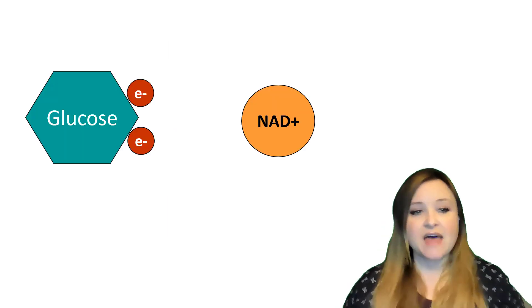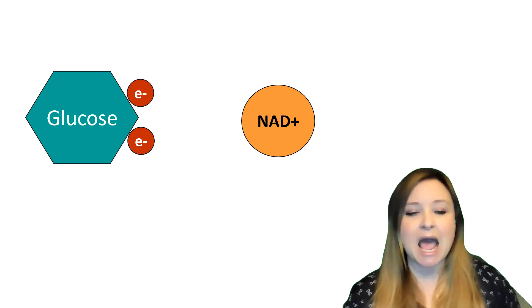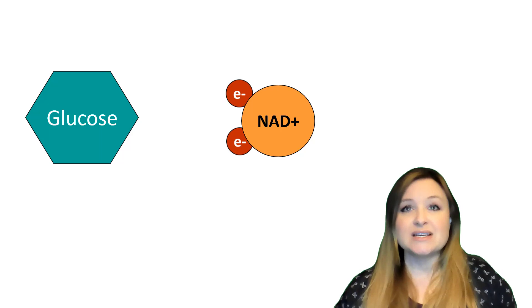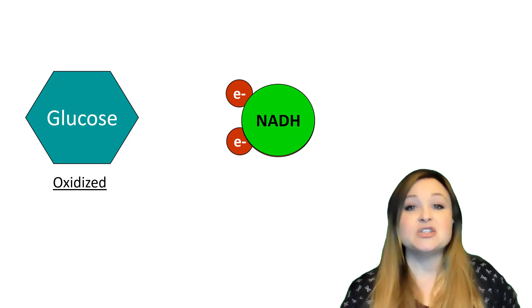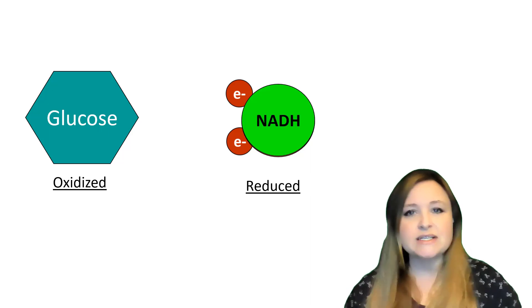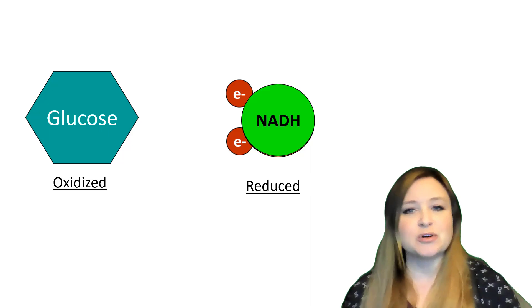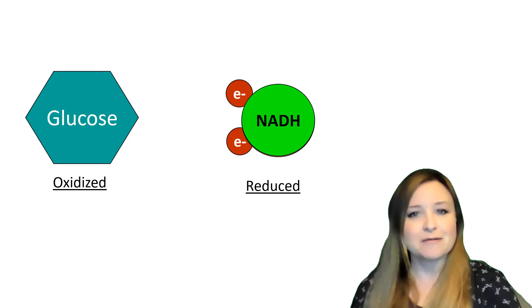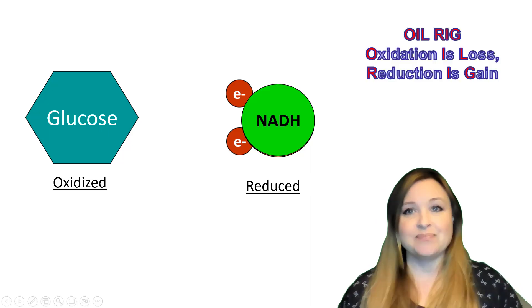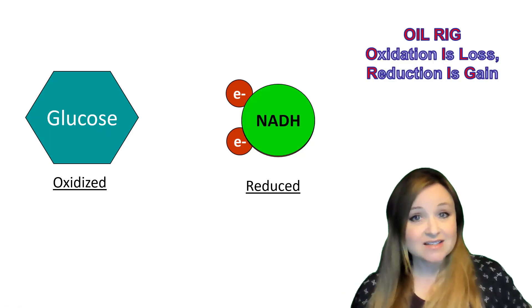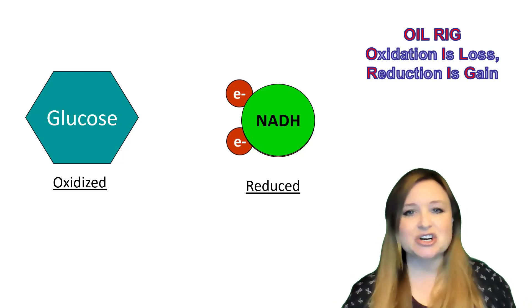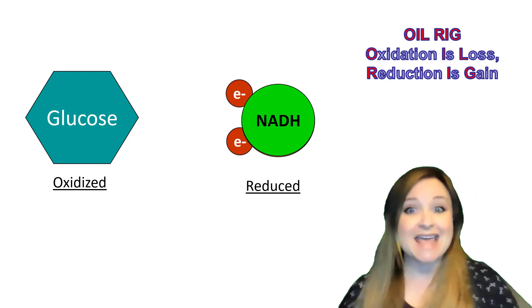During the reactions of cellular respiration, that glucose molecule gets broken down and rearranged, and as that happens it releases electrons that NAD+ picks up. So glucose is oxidized and NAD+ is reduced to NADH. That's the whole point of cellular respiration — the food molecules we eat are broken down and the electrons are harvested from them. NAD+ becomes reduced to NADH when it picks up all of those electrons.